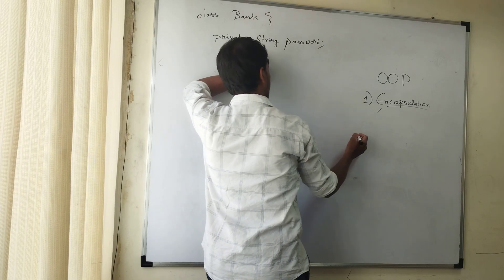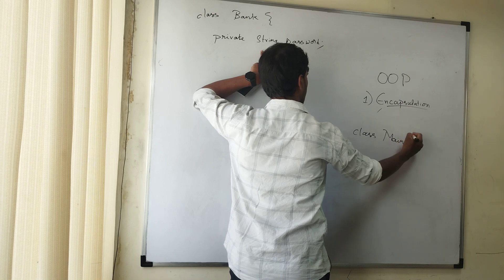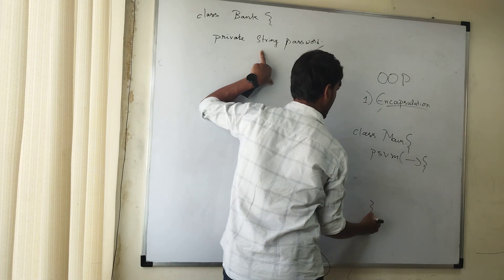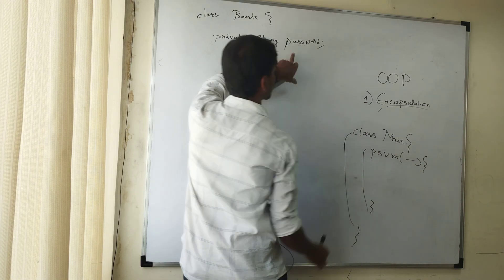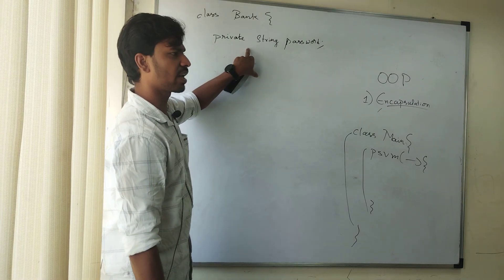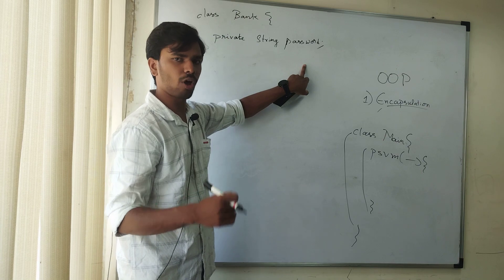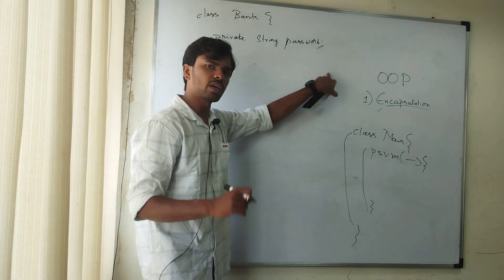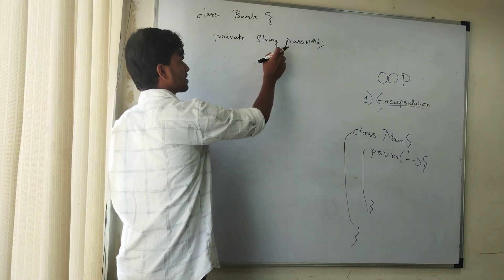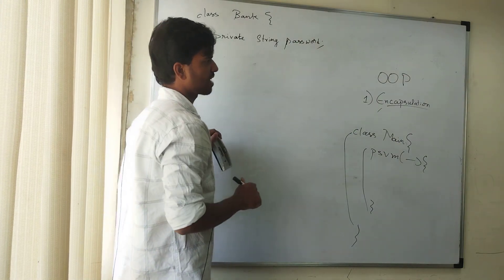Whenever a variable is declared as private, in the main method class it is not visible. To access this variable, we will be writing getters and setters. Getters and setters are nothing but a format which is followed by all inbuilt libraries in Java.